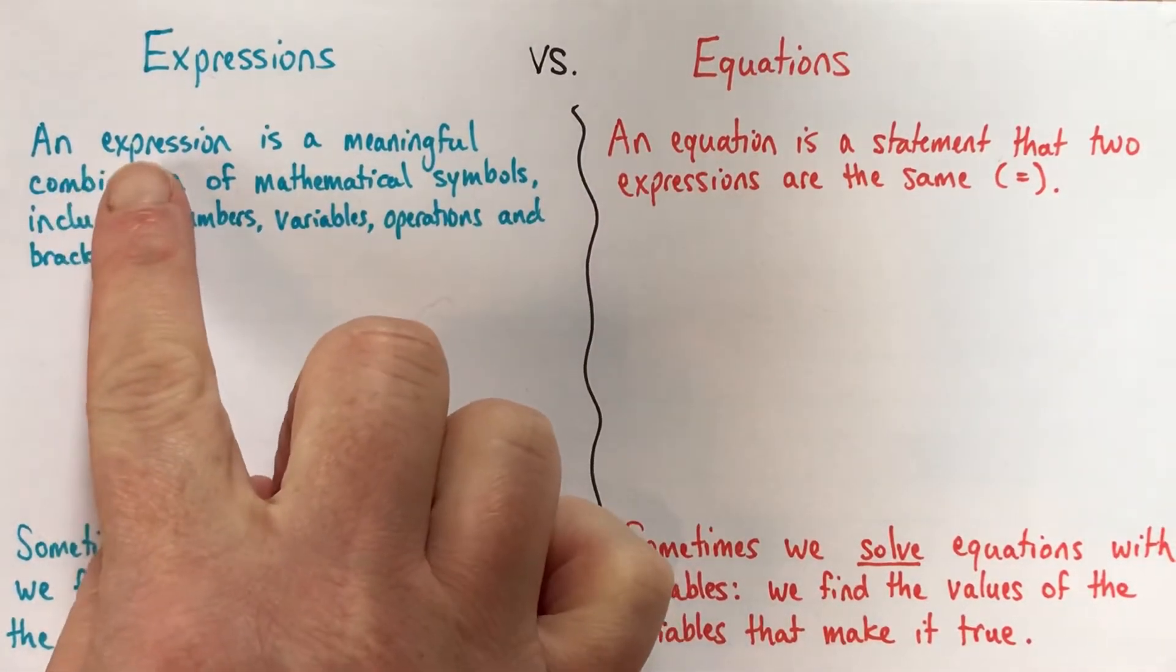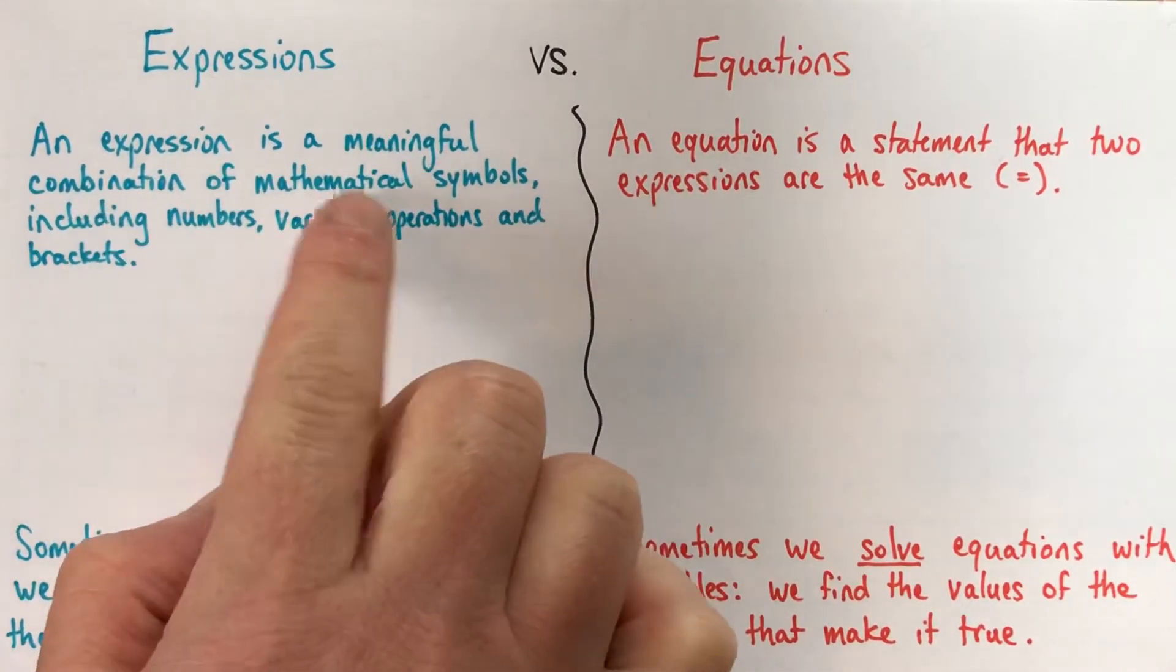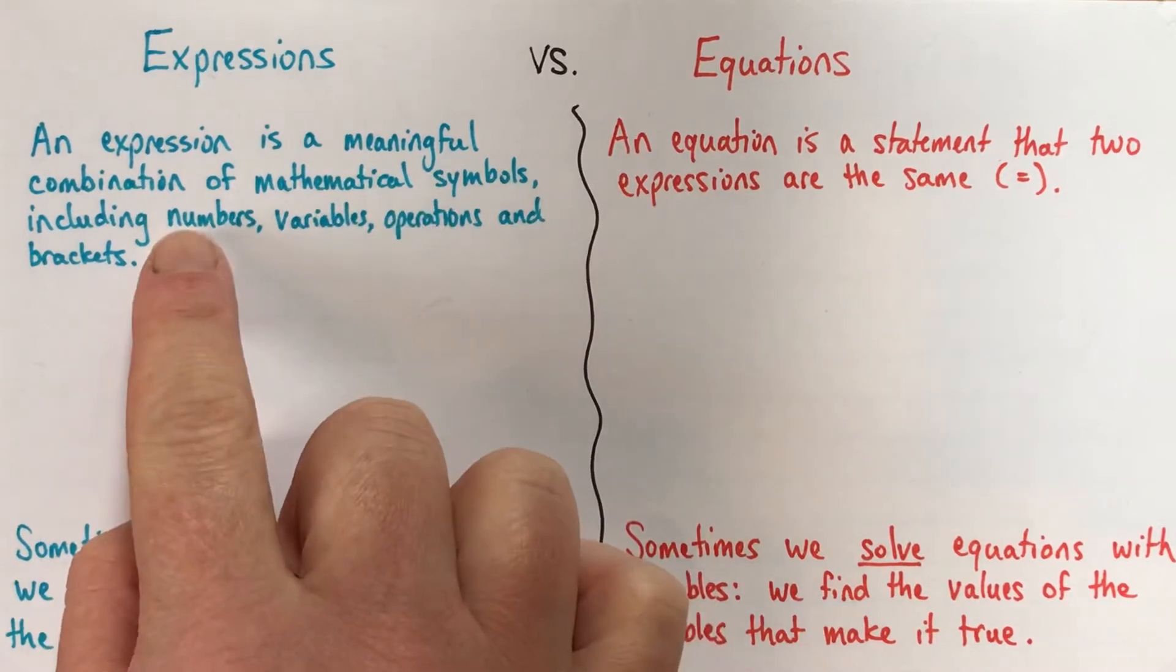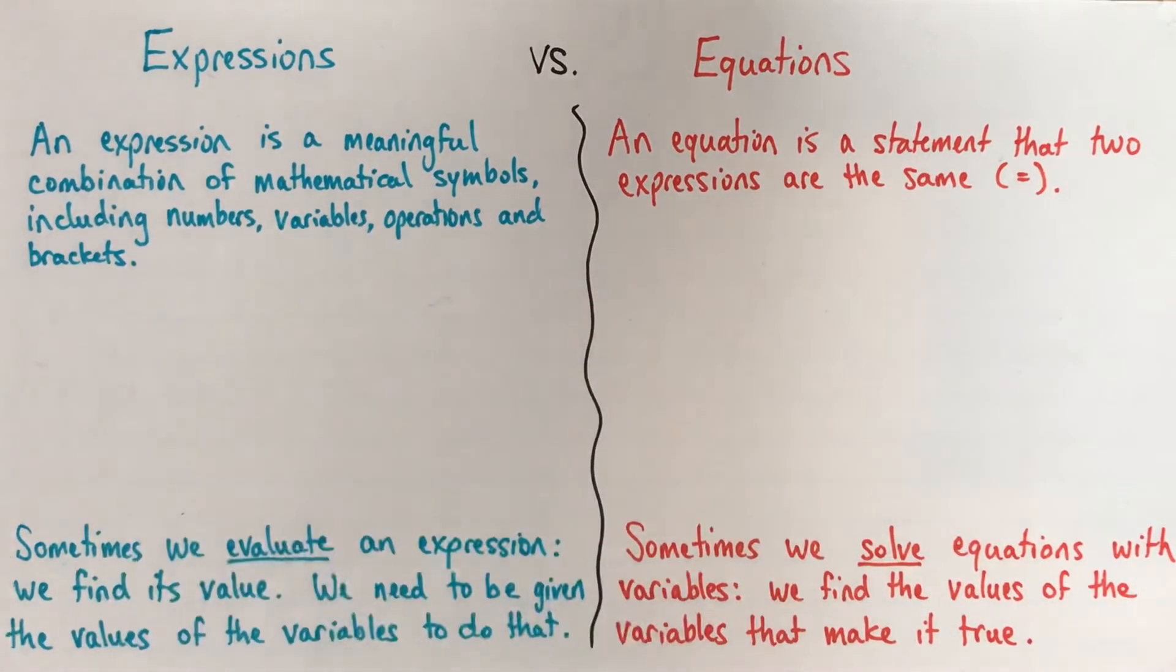So we'll start, an expression is a meaningful combination, we'll talk about the meaningful in a second, of mathematical symbols, and those could include usually the most common ones you see to start off with are numbers and variables and operations and brackets or parentheses.